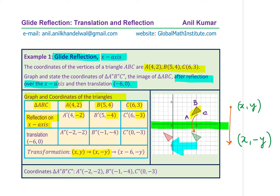Since you want to move left, the x values will be reduced by 6, so x minus 6 is the new coordinate value. 4 minus 6 is minus 2, 5 minus 6 is minus 1, 6 minus 6 is 0. That gives us the coordinates of our final position. So the triangle is translated after the reflection, and this whole operation is called glide reflection. The final coordinate points are A double dash (-2,-2), B double dash (-1,-4), C double dash (0,-3).